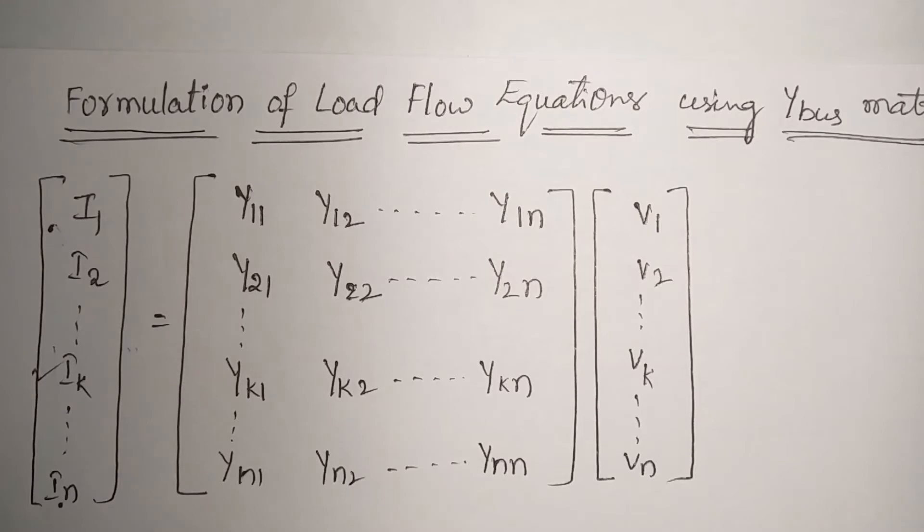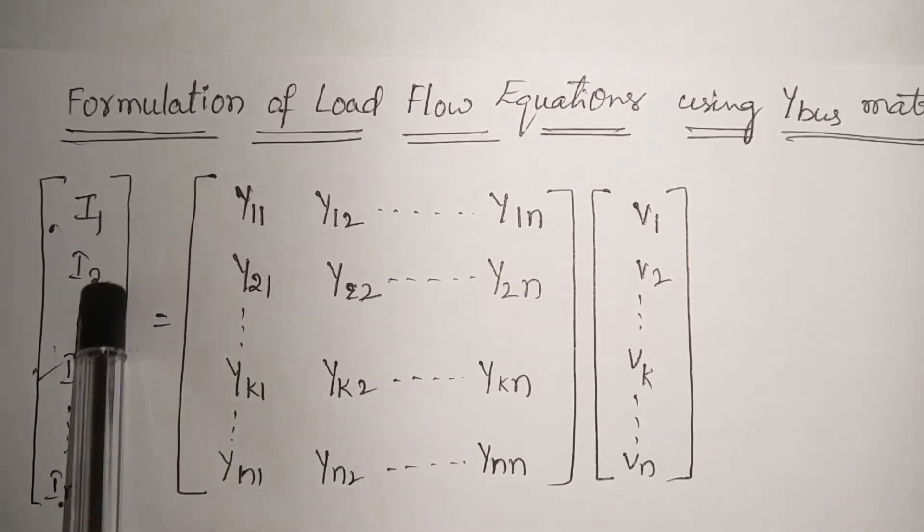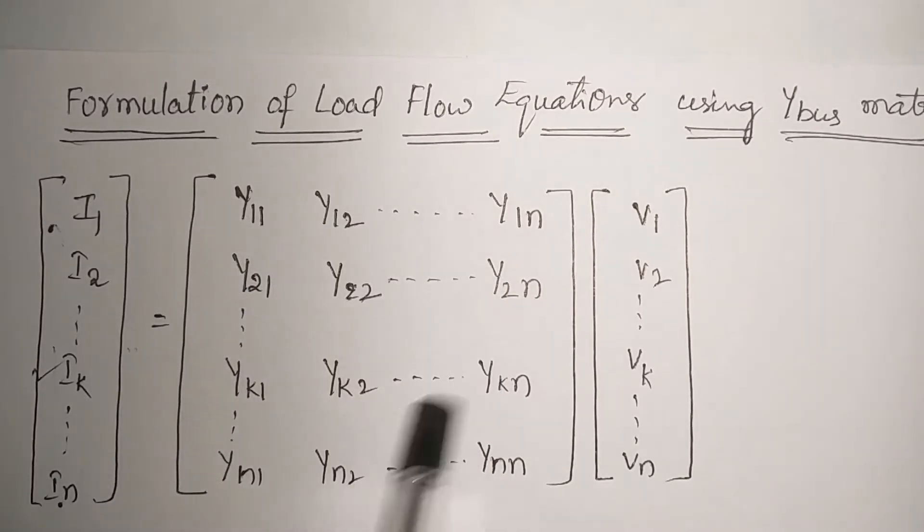Here in this video we have considered a nodal admittance model of n-bus. So this is the corresponding equation. In this equation, I1, I2, and so on In, these are all the impressed currents at their respective buses of the network having n buses. This is the corresponding Y-bus, so V1, V2, and so on Vn, these are all the impressed voltages of our network.